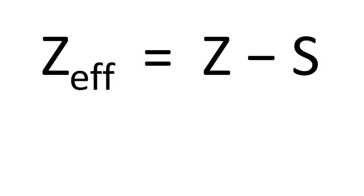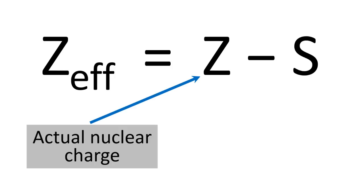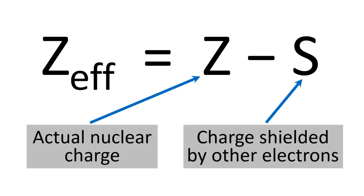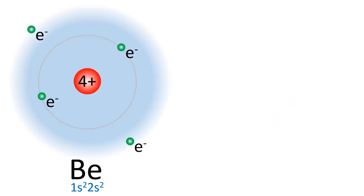The effective nuclear charge is the amount of positive charge that each electron feels, and it accounts for shielding. It's calculated by taking the actual nuclear charge — the positive charge of the nucleus — minus the charge shielded by other electrons. If we take a look at a beryllium atom, which has the electron configuration 1s², 2s²...